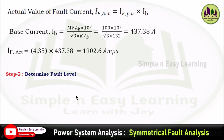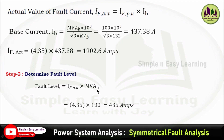Step 2: Determine the fault level. Using the direct formula, fault level = I_F (per unit) × base MVA. With base MVA = 100 and per unit fault current = 4.35, the fault level is 435 MVA.